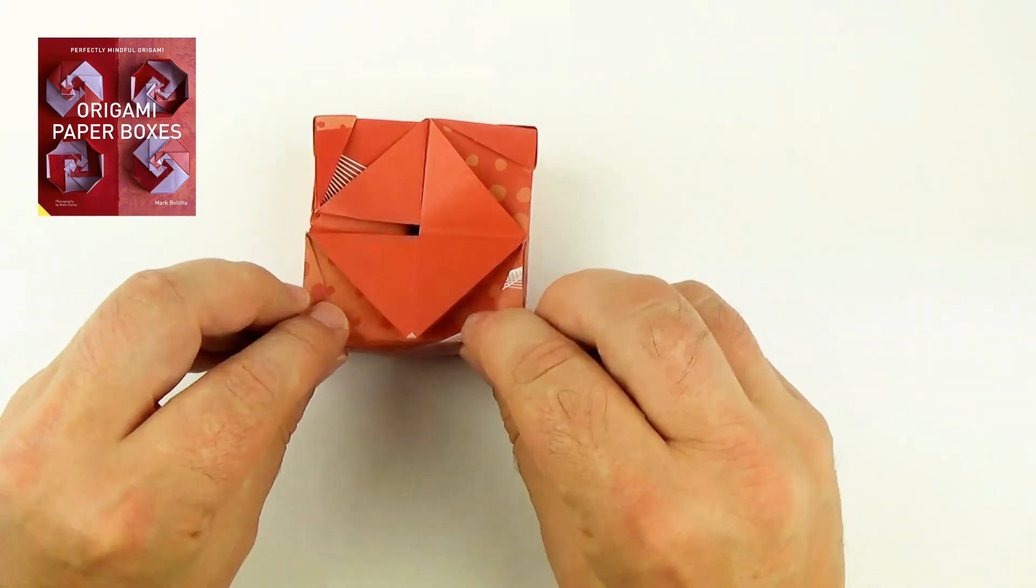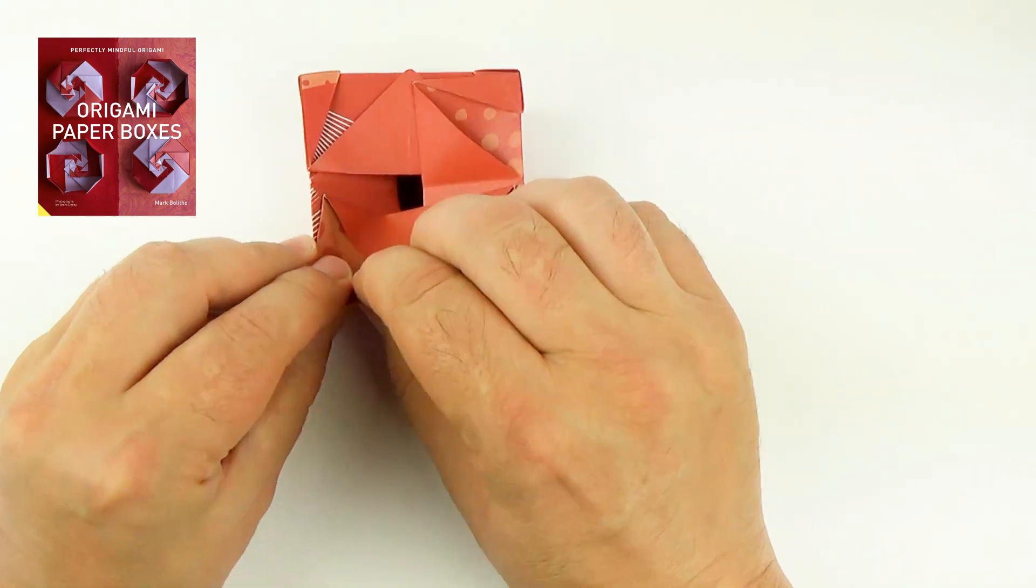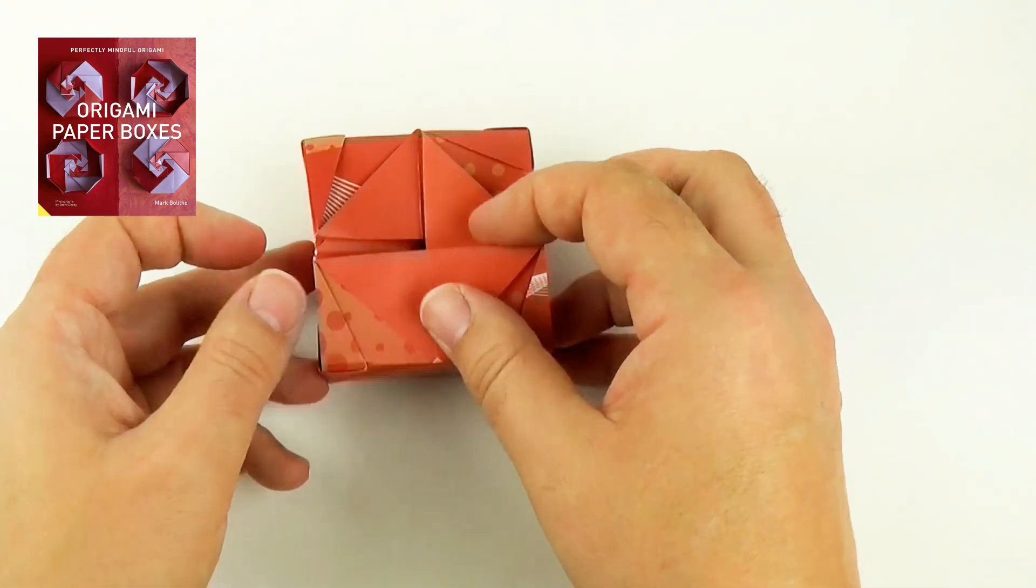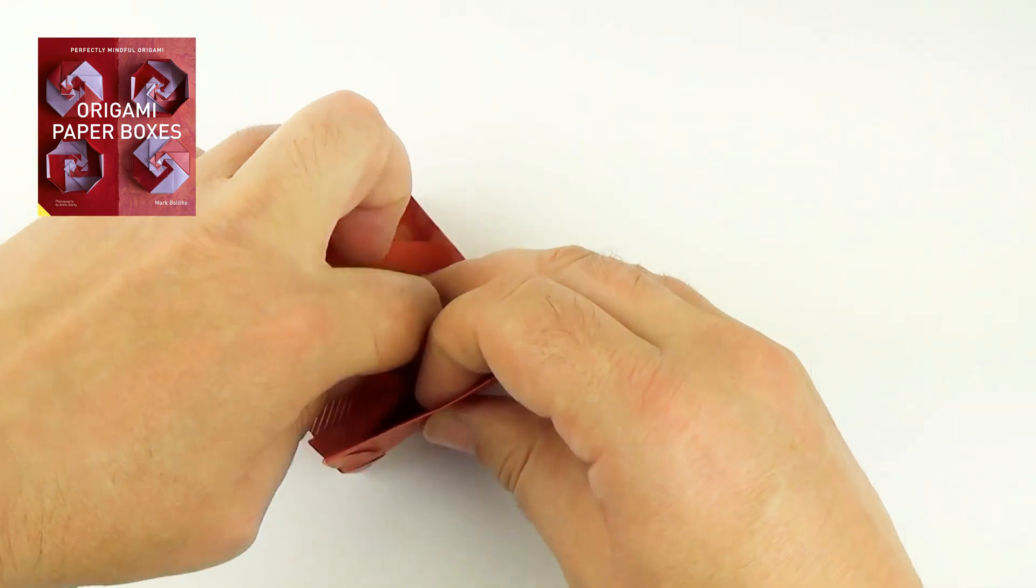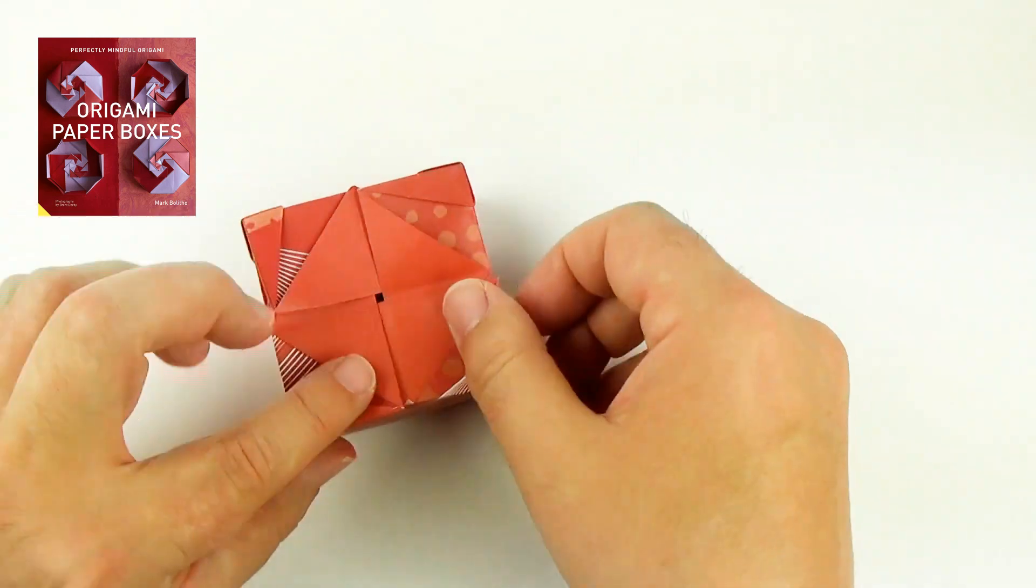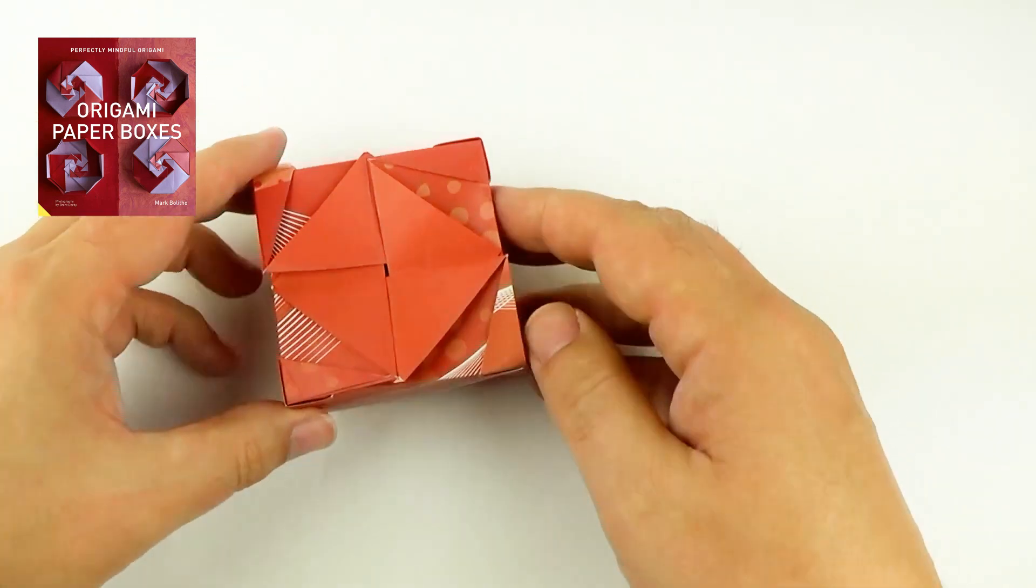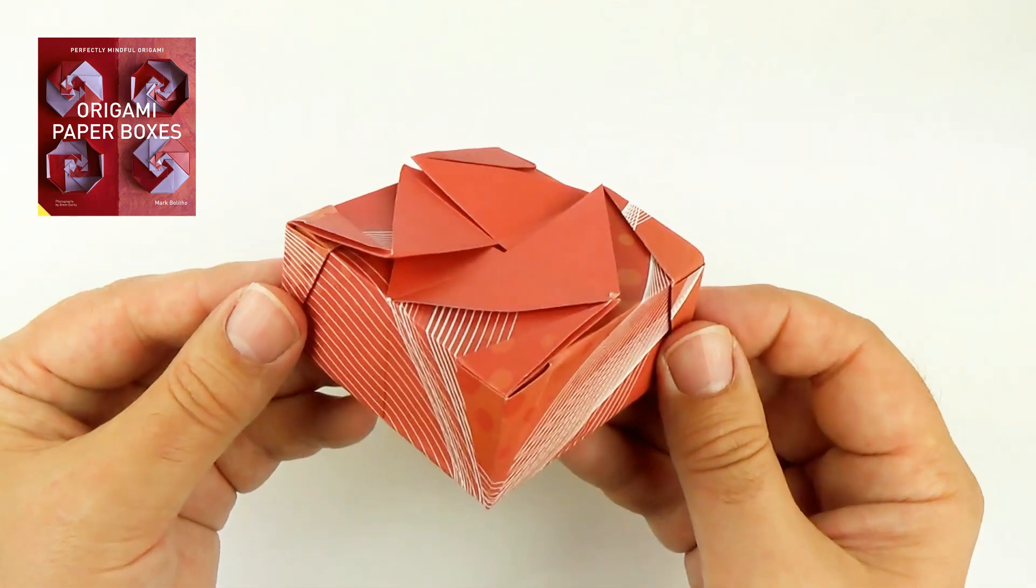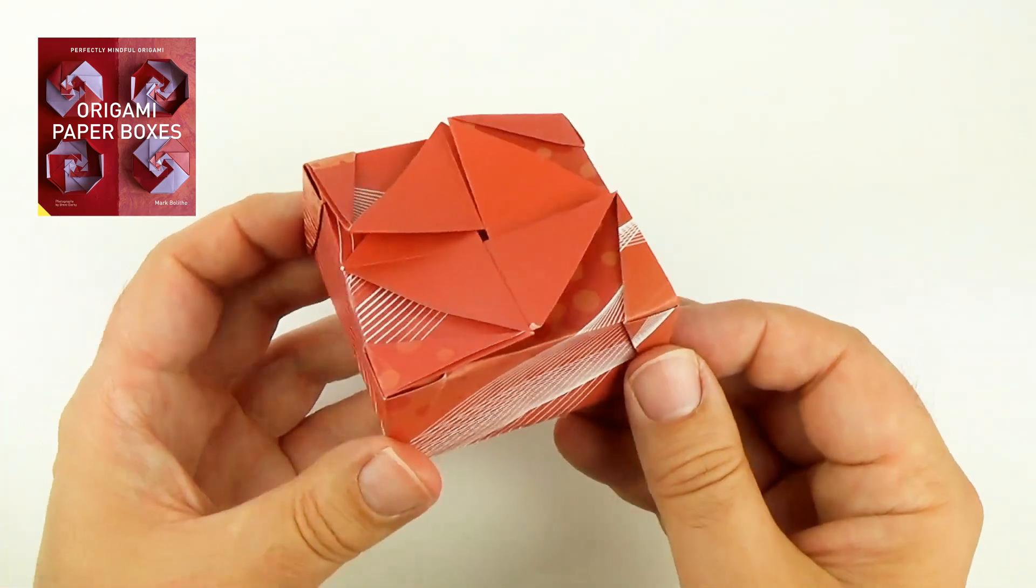And finally the last piece I fold over. Open the corner. Tuck the corner inside. Now we've sealed the box with a little lid. And our box is complete.